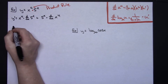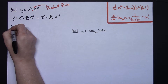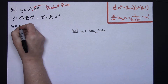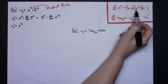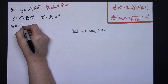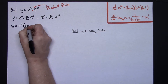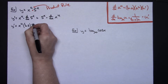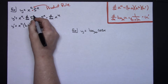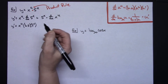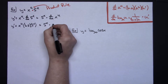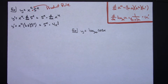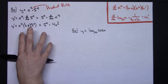Taking the derivatives: y prime equals x to the 4th — here I've got a constant base and the exponent is a function of x, so I implement the first formula — times natural log of 5 times 5 to the x times the derivative of that exponent, which is just 1 (not written), plus 5 to the x times the derivative of x to the 4th, which is 4x to the third.